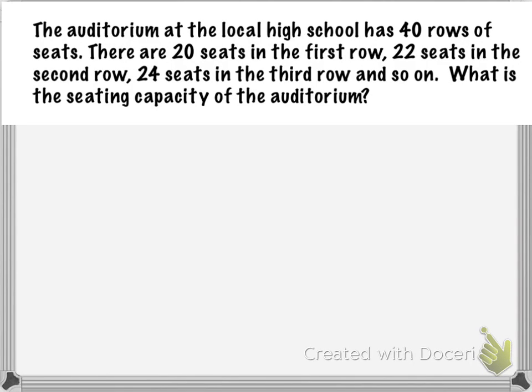The auditorium at the local high school has 40 rows of seats. There are 20 seats in the first row, 22 seats in the second row, 24 seats in the third row, and so on. What is the seating capacity of the auditorium?